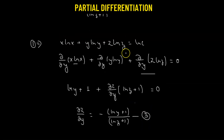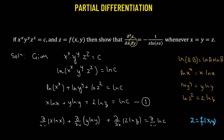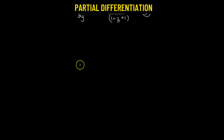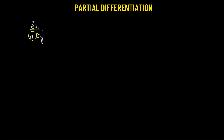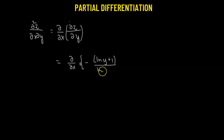Now we find the second partial derivative of z with respect to y followed by x, which is ∂/∂x[∂z/∂y]. We substitute the value of ∂z/∂y from equation three: we need the partial with respect to x of negative (log y + 1) divided by (log z + 1).